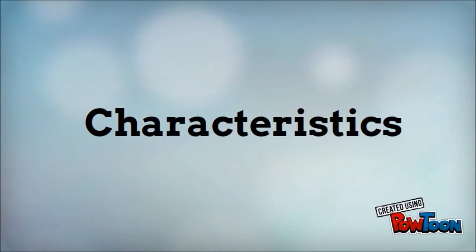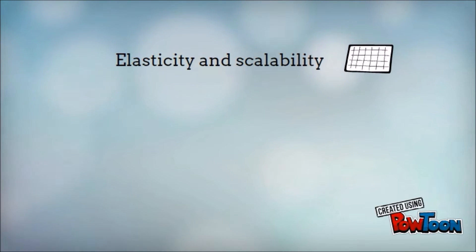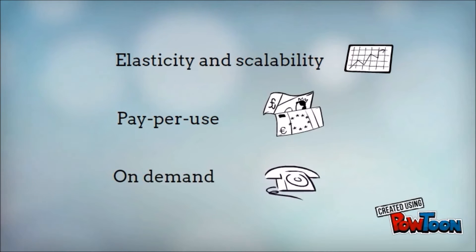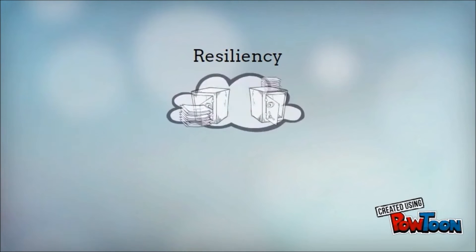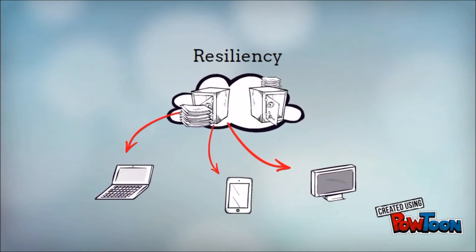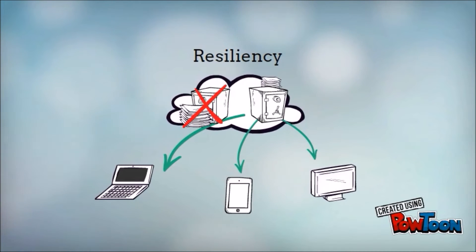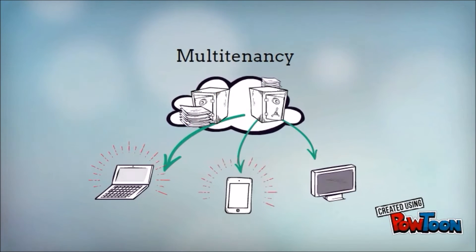Here are some characteristics of cloud computing. Elasticity and scalability: expand and reduce resources according to your specific service requirements. Pay-per-use: pay for cloud services only when you use them. On-demand: cloud services are invoked only when you need them. Resiliency: completely isolate the failure of server and storage resources from cloud users; work is migrated to a different physical resource in the cloud with or without cloud user awareness.